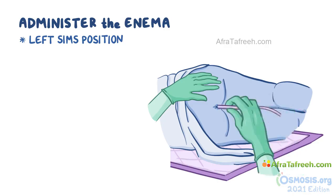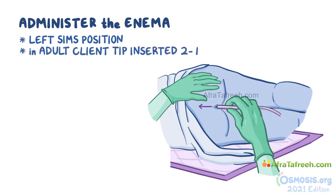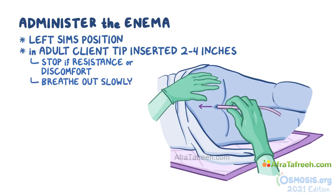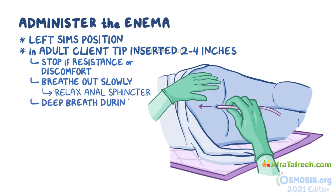Slowly insert the tube so it moves toward the umbilicus. In an adult client, the tip should be inserted about 2 to 4 inches. Stop if you feel resistance or if the client complains of discomfort. Ask the client to breathe out slowly through their mouth — this will help relax the anal sphincter and make the procedure easier. Telling the person to take a deep breath during insertion can also ease discomfort.